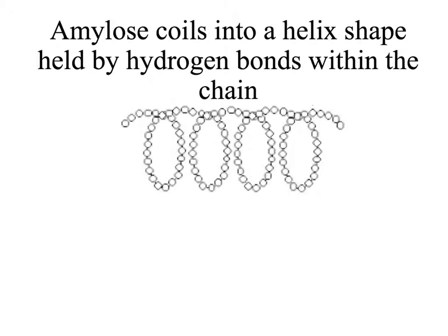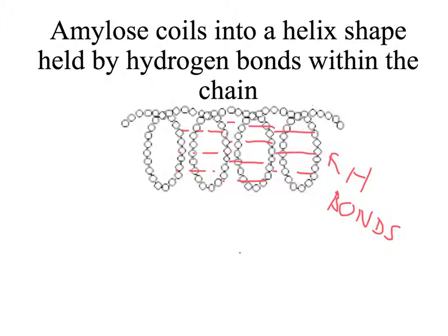Once the polysaccharide chain of amylose has been formed, the chain then coils into a helix shape. This involves weak hydrogen bonds due to the interactions between the OH groups and H groups on the glucose molecules. The helix shape makes the chain a very compact molecule, which means it doesn't take up much space inside the cell — important because amylose is a storage polysaccharide in a plant cell and is a store of glucose.